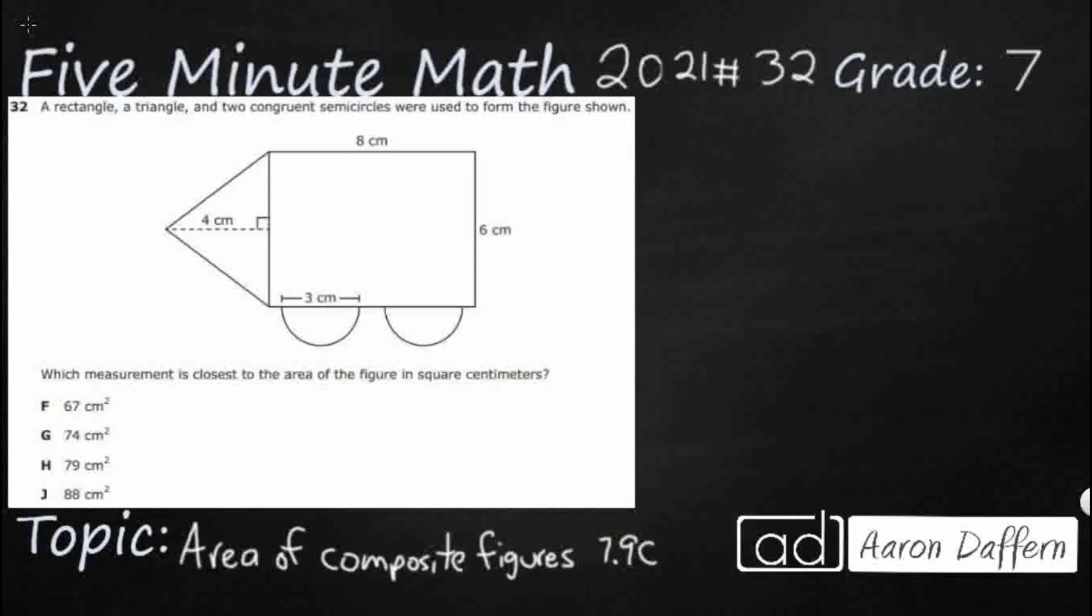So we've got a rectangle, a triangle, and two congruent semicircles used to form this, kind of looks like some type of vehicle here. So I need to find the area of this composite figure, or at least find the estimate closest to that. And you notice there's no decimals here, so it's going to be whole numbers only.